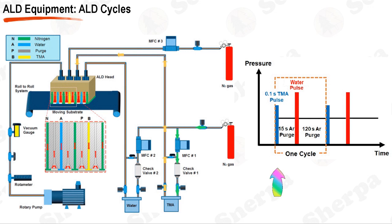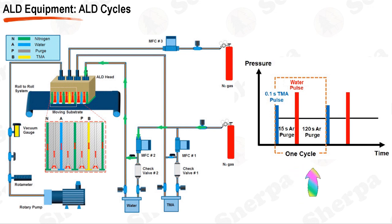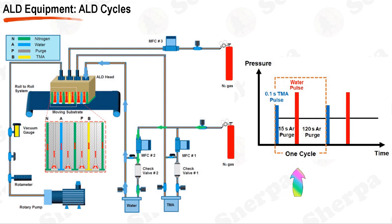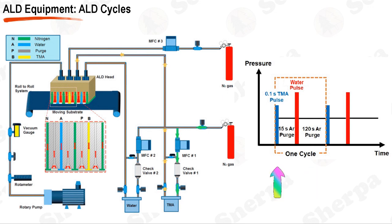In an atomic layer deposition, ALD, process, a typical recipe might involve the use of precursors such as trimethyl aluminum, TMA, and water. During the TMA feeding phase, the precursor is introduced into the canister through a process known as bubbling, where a carrier gas, often an inert gas like nitrogen, is bubbled through the liquid TMA. The carrier gas then carries the vaporized TMA into the deposition chamber where it reacts with the surface of the substrate. Once the TMA has been sufficiently introduced, the system undergoes a purge phase to remove any unreacted TMA and byproducts from the system before the introduction of the next precursor.